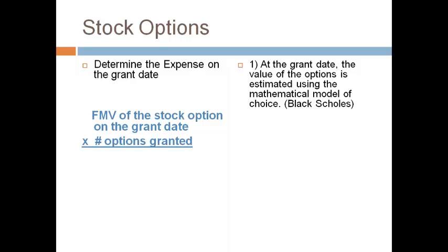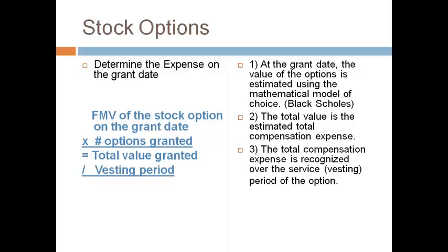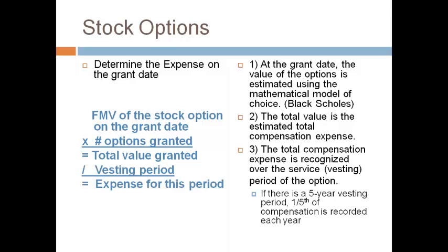You will take the fair market value of the option and multiply it by the total number of options granted to determine the total value of stock options granted. The total value will be divided by the vesting period to get the expense that is recorded each year. For instance, one-fifth of the total value will be expensed each year when the vesting period is five years.